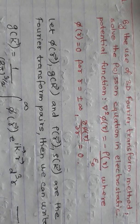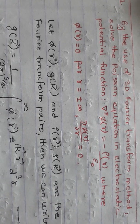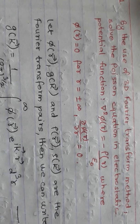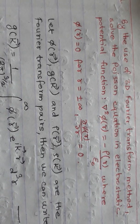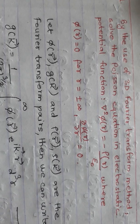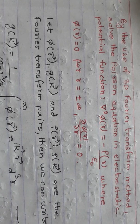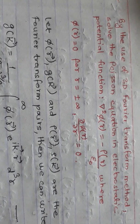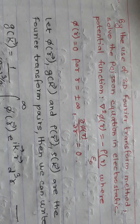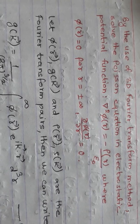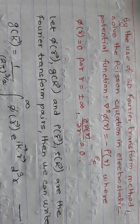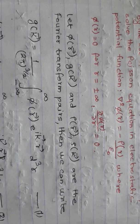The boundary conditions are: phi(r) equals zero as r approaches plus or minus infinity, and the gradient del phi also equals zero at that position. So phi goes to zero when r goes to plus or minus infinity.